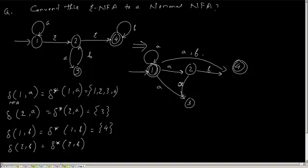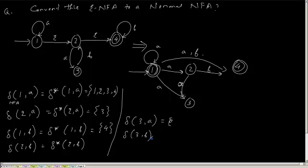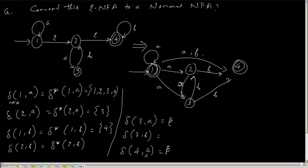For state 3: from 3 there are no 'a' transitions, so delta of (3, a) is empty (phi). Delta of (3, b) gives {2, 4}. For state 4: delta of (4, a) is empty (phi), and delta of (4, b) remains at 4. This completes the newly created NFA from the given epsilon-NFA.